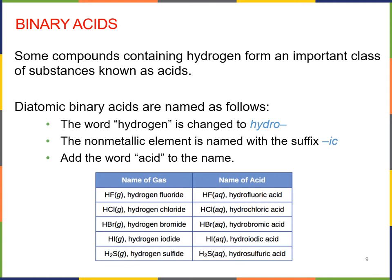Now we're going to talk about a group of compounds called acids. Acids are a class of compounds that contain hydrogen and become acidic when they're dissolved in water. Acids are important in industry, in manufacturing, in cooking, in biochemistry, and all sorts of places. So we're going to look at diatomic binary acids — acids that are made up of two atoms. Those two atoms are going to be hydrogen plus a second atom, which is generally a nonmetal. We're going to focus on the name of the acid, which is the compound when it is dissolved in aqueous solution.